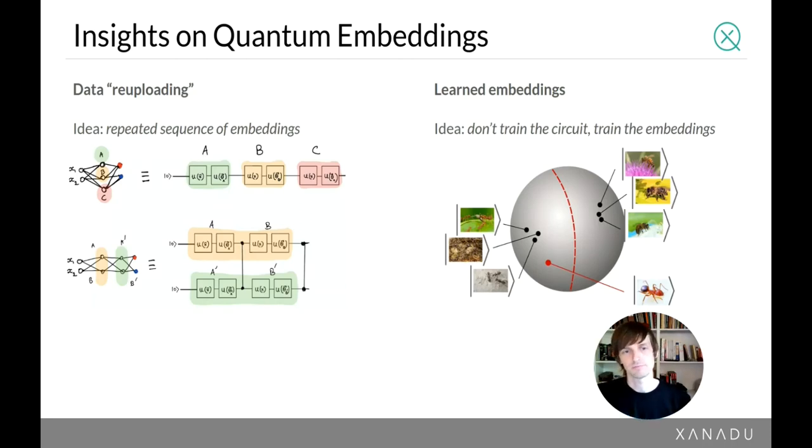Some strategies that go beyond the simple initial strategy include data reuploading - the idea is to embed data using a sequence of repeated rotations with maybe free parameters in between, which can make a more complex function available than just a single rotation. The other idea is to have a trainable embedding layer - train the embedding and use standard quantum information metrics to classify the data. Learnable embeddings is also a very viable strategy.